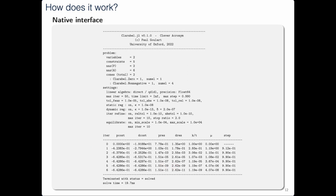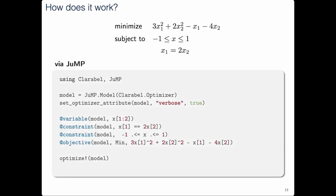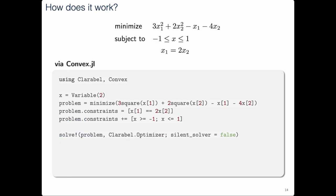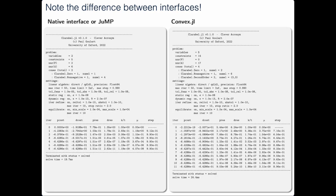It's a little annoying to do it that way, so it's better to use JuMP because the solver supports the MathOpt interface in Julia. In JuMP, you just say you want to use Clarabel, construct your model in the usual way, define your variables and constraints, and call optimize — you get exactly the same answer as through the native interface. If you don't like JuMP, you can use Convex.jl instead, with similar steps but slightly different syntax: construct your problem with your objective function, construct your constraints, call solve, and tell it you'd like to see the solver progress.